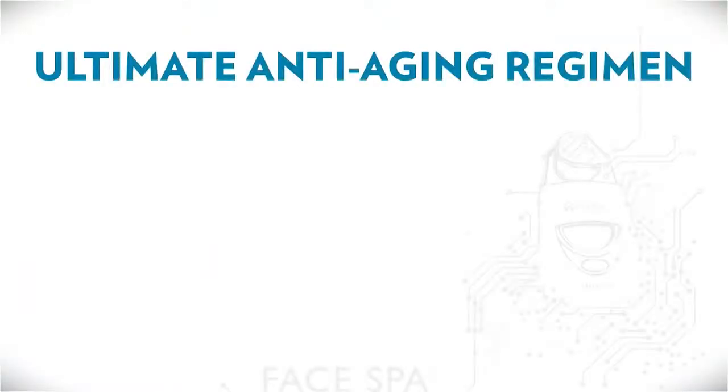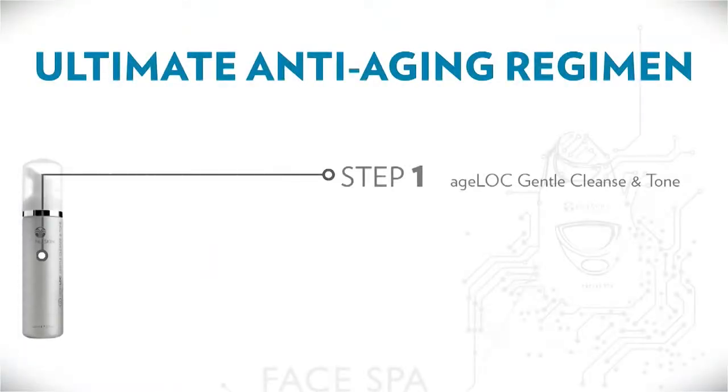The ultimate anti-aging regimen. Step 1 is Agelok Gentle Cleanse and Tone. Use this to gently cleanse and tone your skin in preparation for subsequent steps. It also includes your first dose of Agelok ingredients. Agelok is Nu Skin's innovative research approach where we seek to treat the sources of aging and not just signs and symptoms.